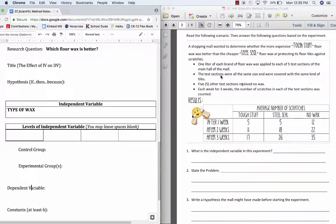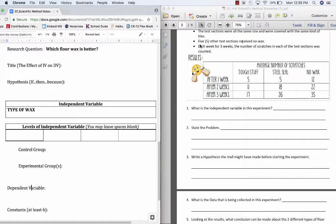The dependent variable is how the experimenter intends to measure these results or what the experimenter is going to see by changing the wax or by changing the independent variable. In the results, it shows in this bullet point that each week for three weeks, the number of scratches was counted. So by changing the type of wax, the experimenter expects to see a difference in the number of scratches. So that would be our dependent variable using this story.